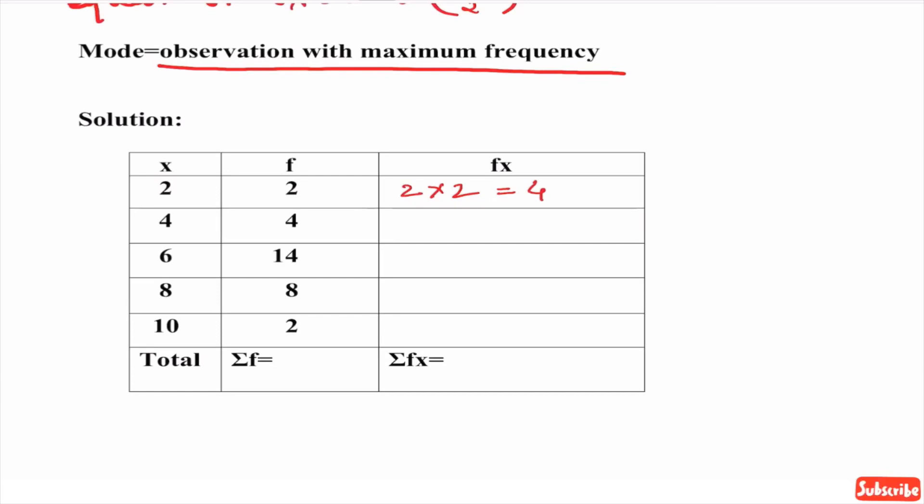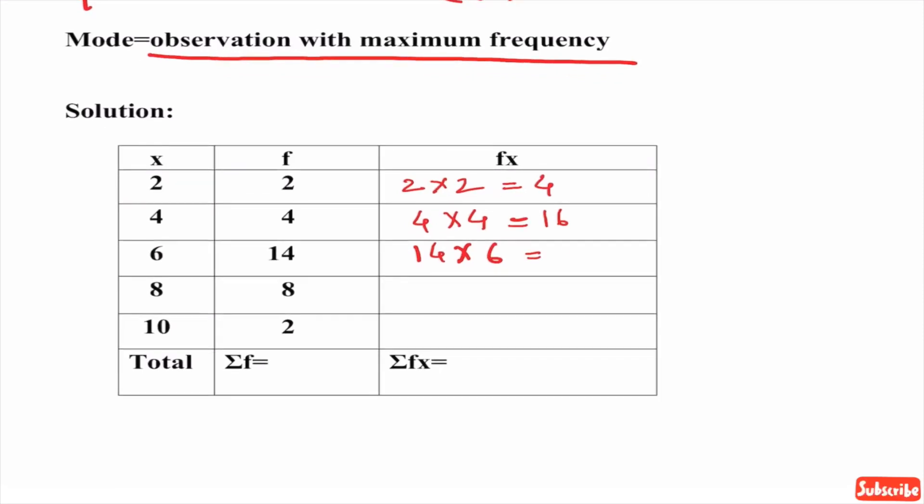Second f value is 4, corresponding x value 4. 4 times 4 is 16. Next, f value is 14. Corresponding x value 6 that equals 84. Next, 8 into 8 equals 64.